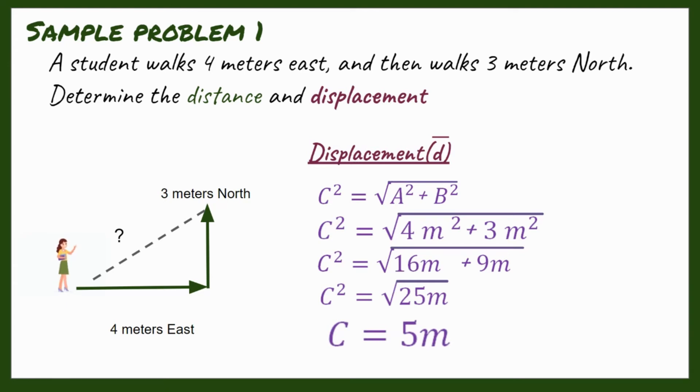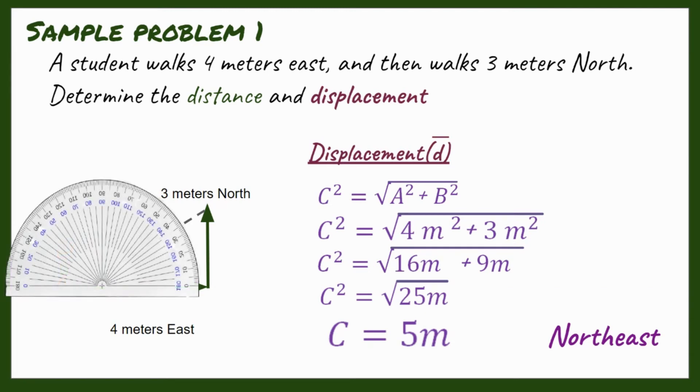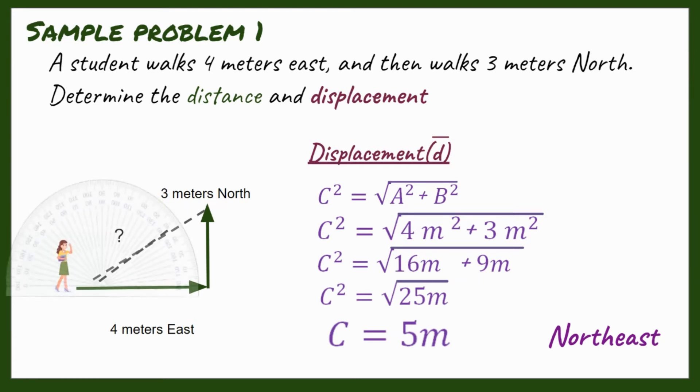We have now the magnitude. Since we are trying to find out the displacement, we still need to know the direction of the person. So, in this sample, we will be using a compass. As you can see, the direction in the compass is northeast. So, to be more specific to direction, we need to measure the angle, and we will use the protractor. The angle is approximately 63 degrees.